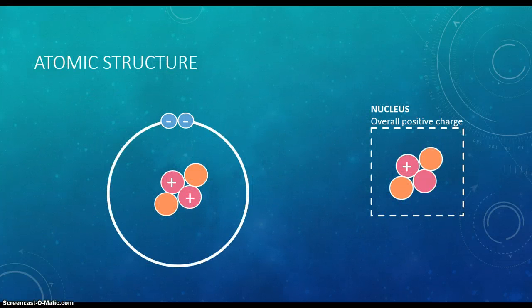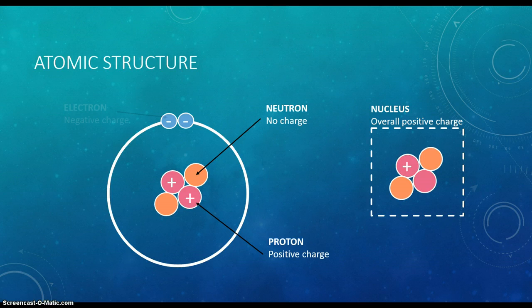Before we can continue, a brief background in atomic structure is necessary. An atom is composed of three subatomic particles: neutrons, protons, and electrons. Neutrons have no charge, protons have a positive charge, while electrons have a negative charge.